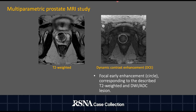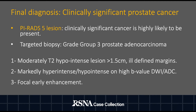Here I'm showing you the same T2 weighted image, but now alongside a corresponding image from the dynamic contrast enhancement series. Within the circle, you see focal early enhancement corresponding with the T2 weighted abnormality. These MRI features are consistent with a PIRADS 5 lesion, meaning that clinically significant cancer is highly likely. To recall: this lesion was moderately hypo-intense on T2 weighted imaging with ill-defined margins, showed restricted diffusion as evidenced by marked hyper-intensity on high B value DWI and hypo-intensity on ADC, and showed focal early enhancement.